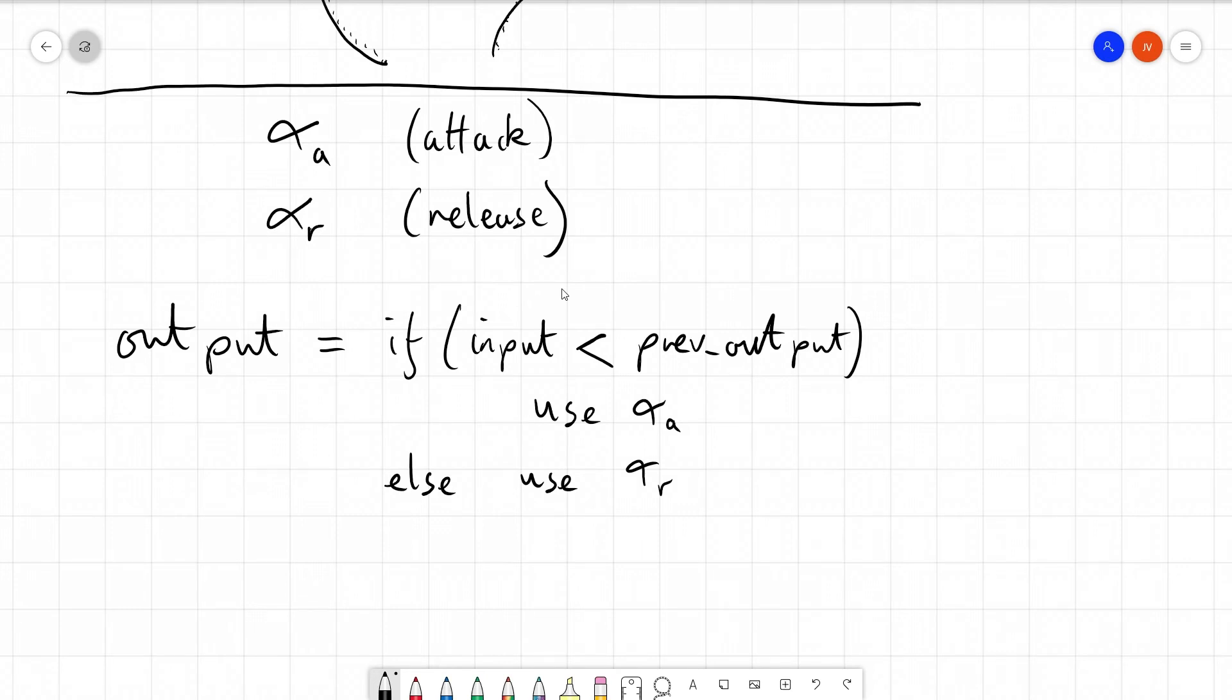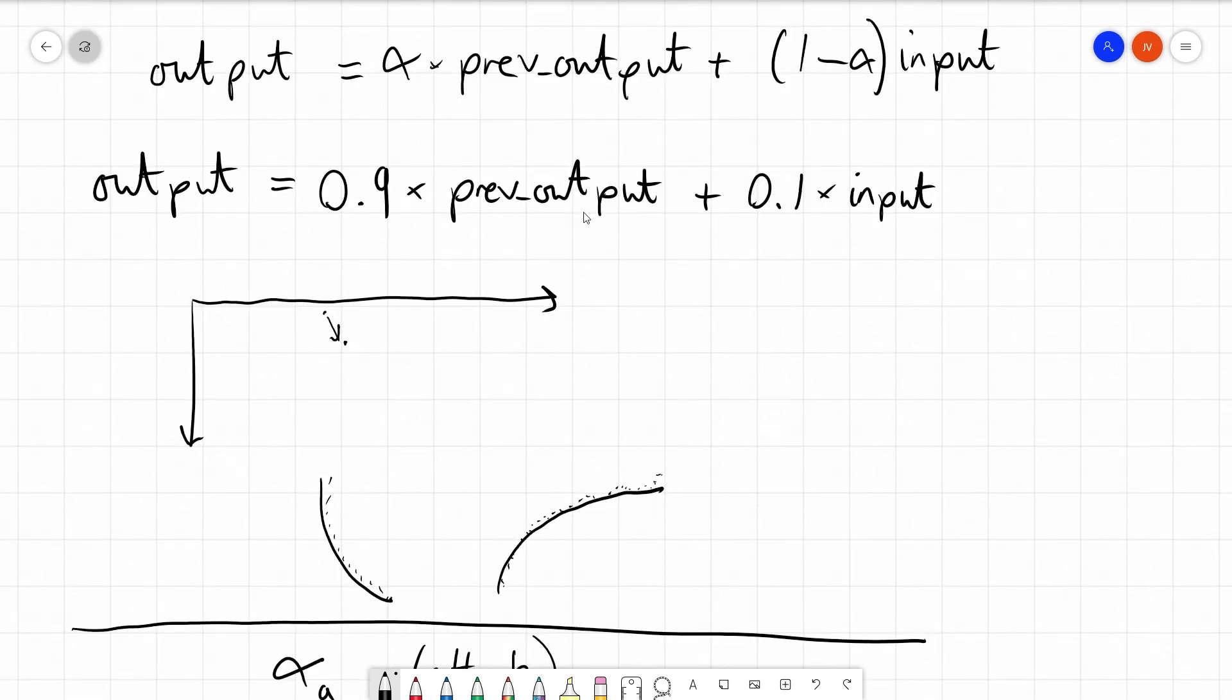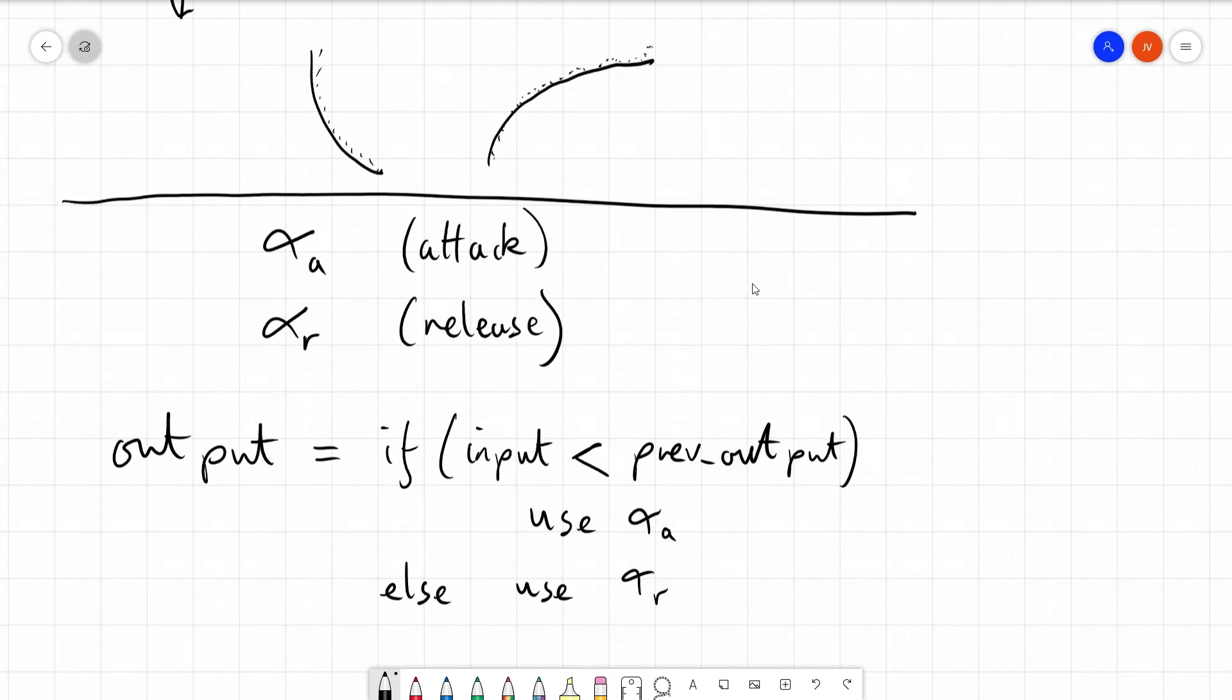If the input value is equal to the previous output, it doesn't matter whether we use the attack alpha or the release alpha, because, as you can see, if the previous output is equal to the input, then we're doing 0.9 times x plus 0.1 times x, which is just 1 times x, which just gives us the same input value.